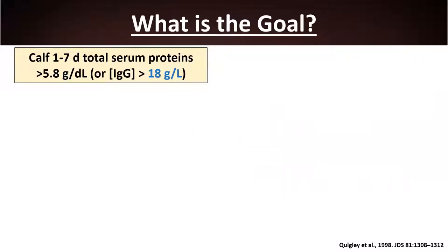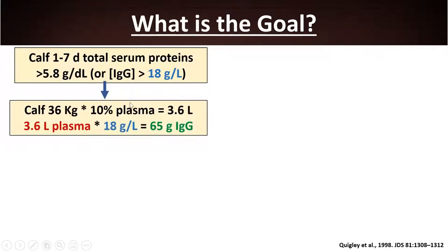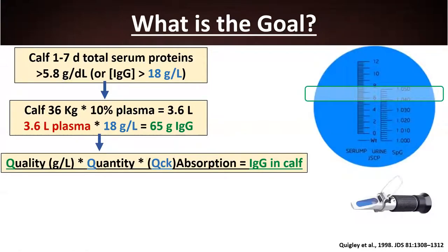The goal is to have calves with IgG concentrations over 18 grams per liter. New research has raised this target, and we now want at least 70% — and some farms aim for over 90% — of calves reaching this level. For a calf weighing roughly 36 kilograms with 3.6 liters of plasma, we need at least 65 grams of IgG in that calf's plasma.